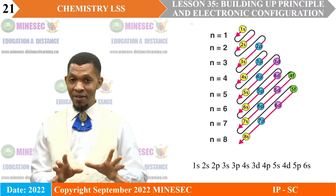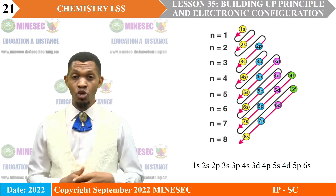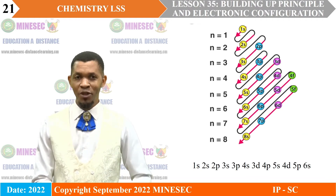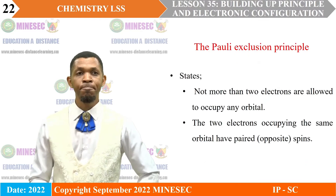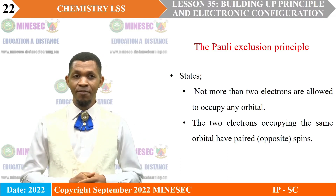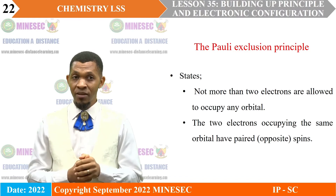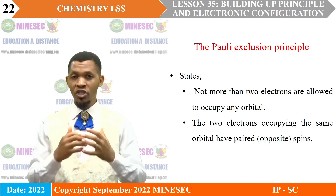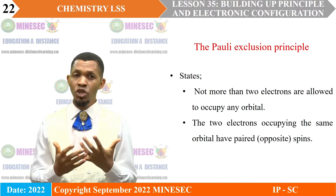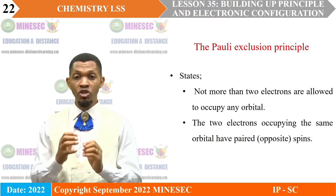With practice in writing electronic configuration using this table, you will master it easily and be able to write electronic configurations without needing the picture. The Pauli Exclusion Principle states that not more than 2 electrons are allowed to occupy any orbital, and the 2 electrons in each orbital must have paired spins — that is, their spins must be opposite.